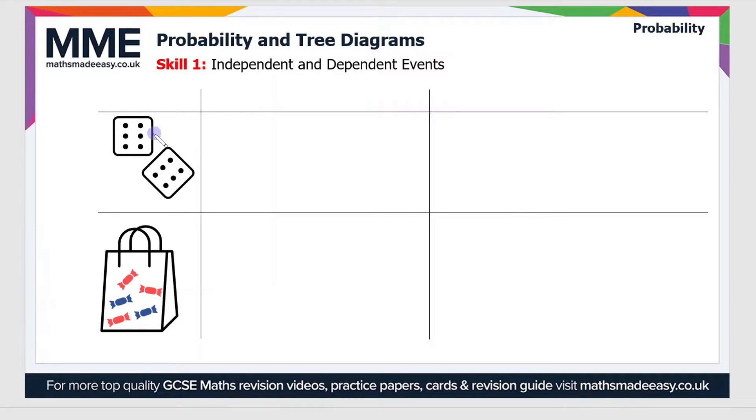I have two different scenarios here. I've got two dice that I'm going to roll, and I have a bag with some sweets in. Let's look at the dice first. Let's say that I roll one die—that can be event one—and event two will be that I roll a second die.